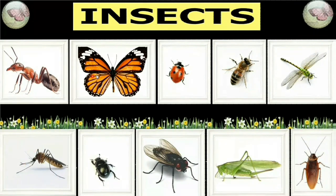I'm going to teach you today the names of these insects. These are insects. Insects are everywhere in the world. Insects are small in size. Insects have six legs.